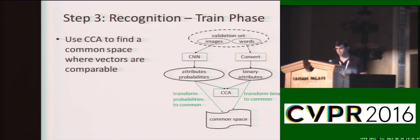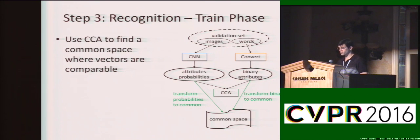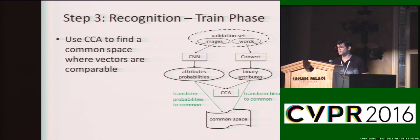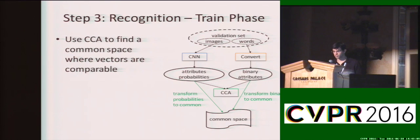To train the CCA, we take the validation set and convert the words into binary vectors using step one, and the images into probability vectors using step two, and then train the CCA to find the common space. The outputs of CCA are two transformations: one from the binary space into the common space, and one from the probability space into the common space.